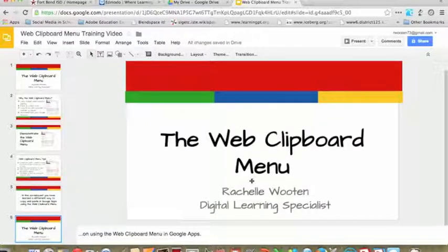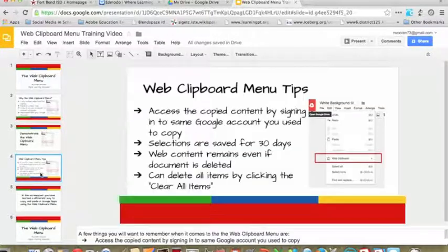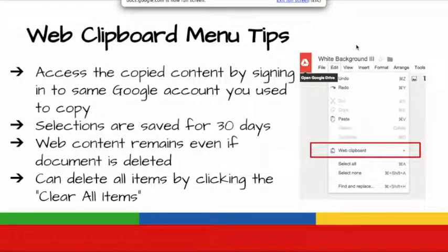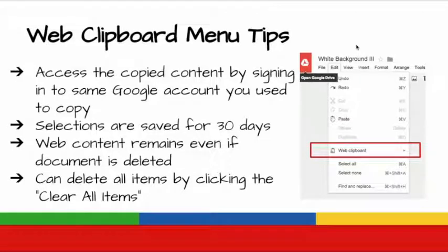Now there are a couple things you want to remember when it comes to using the web clipboard menu. You must access the copied content by signing in to the same Google account you used to copy, and those selections are saved for 30 days. Now if a document is deleted, the web clipboard content still remains as long as it's within that 30-day limit. And you can delete items at any time by clicking the clear all items option.